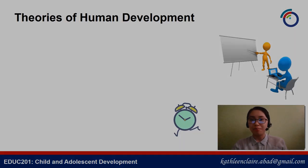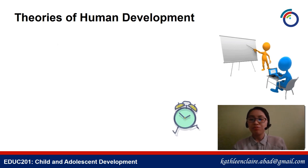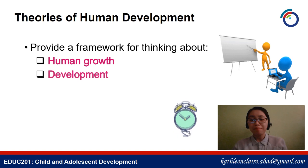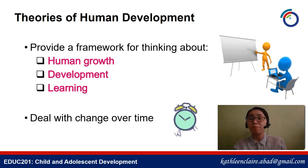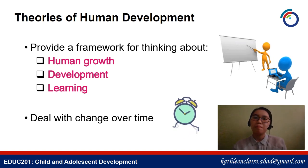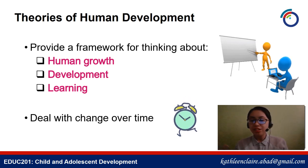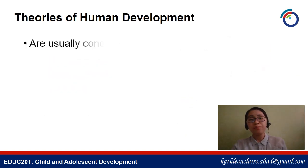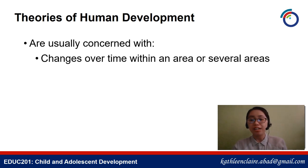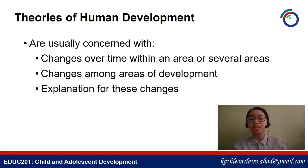Now we move on to the theories of human development. These provide a framework for thinking about human growth, development, and learning, and they deal with change over time. Human development is a complex process — it doesn't fit in one box; it's not one-size-fits-all. These theories enable us to have a better and more accurate understanding of the nature and conditions of human development. We have 13 theories that will be discussed.